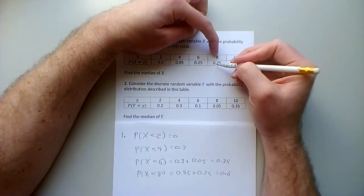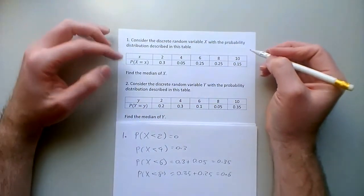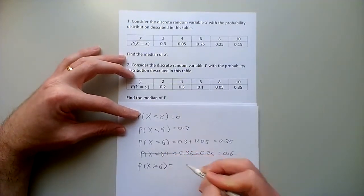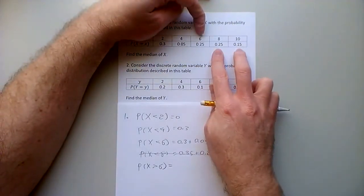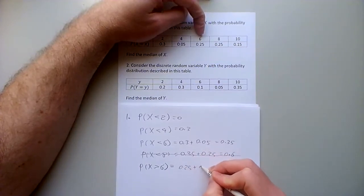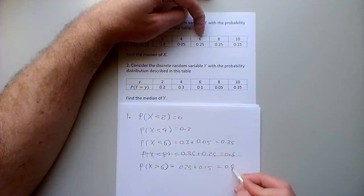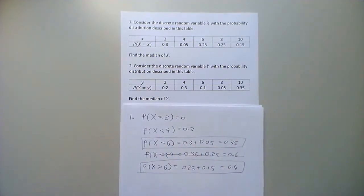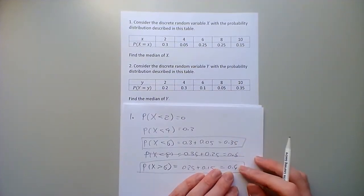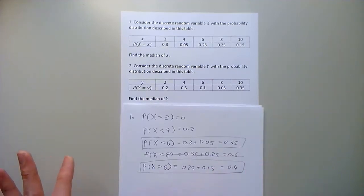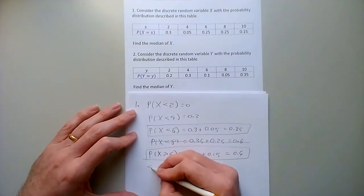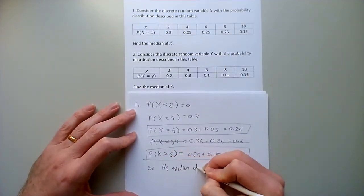We've already gone past half the probability less than 8, so 10 will also have more than half the probability less than it — so neither 8 nor 10 is the median. 6 looks like the candidate. The probability that X is greater than 6: there are two numbers more than 6, which are 8 and 10, with probabilities 0.25 and 0.15, which add up to 0.4 — also less than a half. So the probability of being more than 6 is less than a half, the probability of being less than 6 is less than a half, so the median of X is 6.